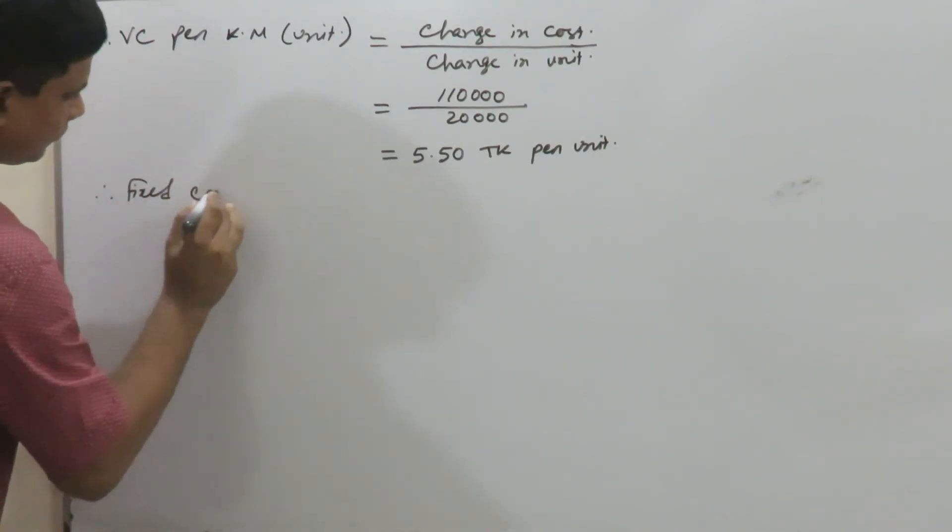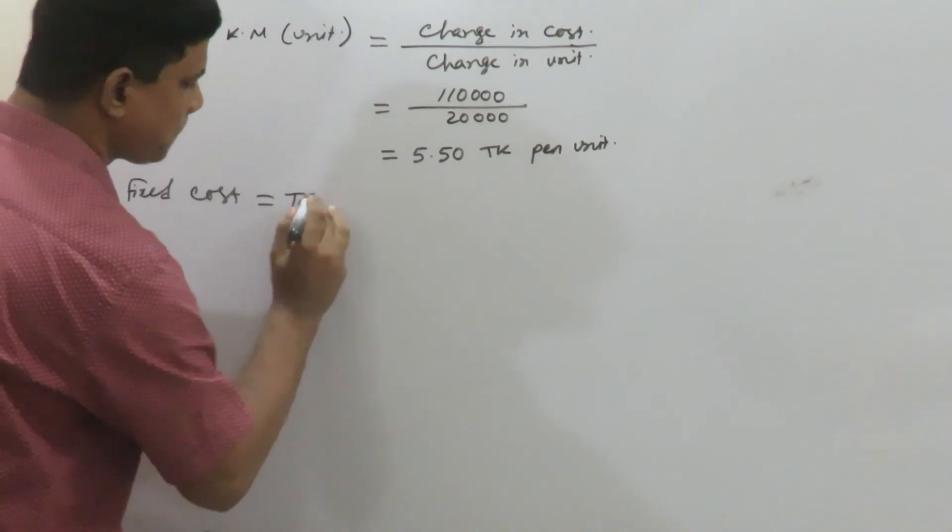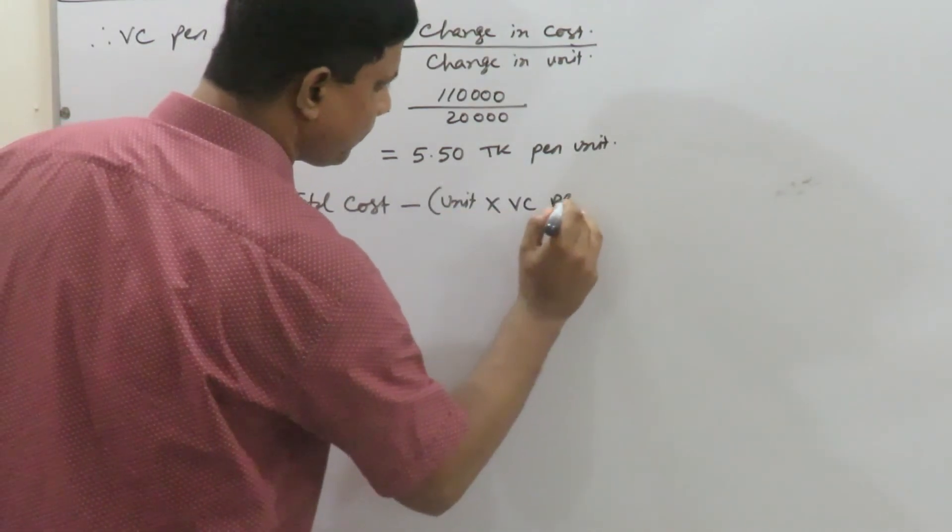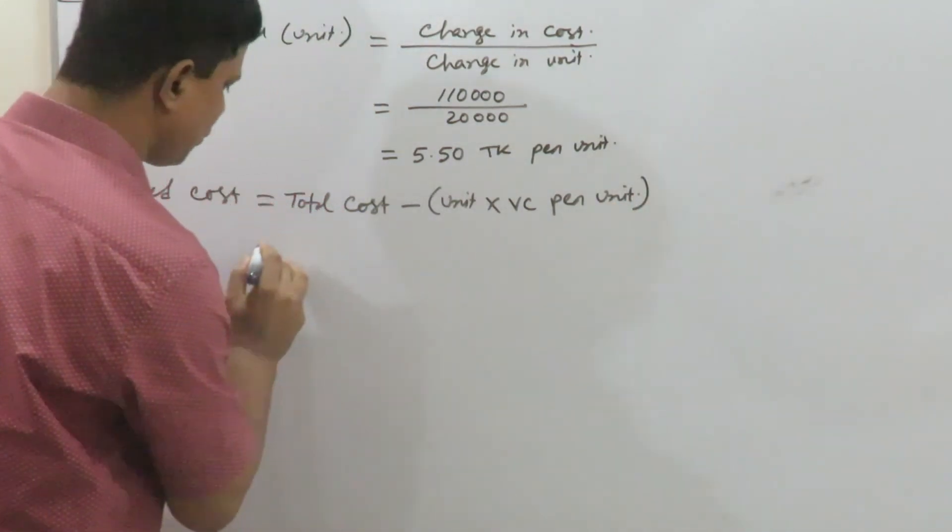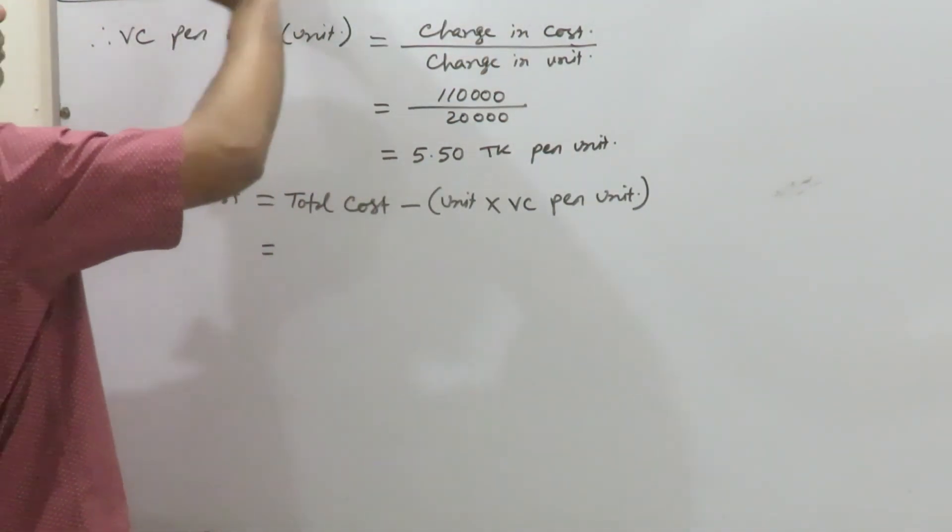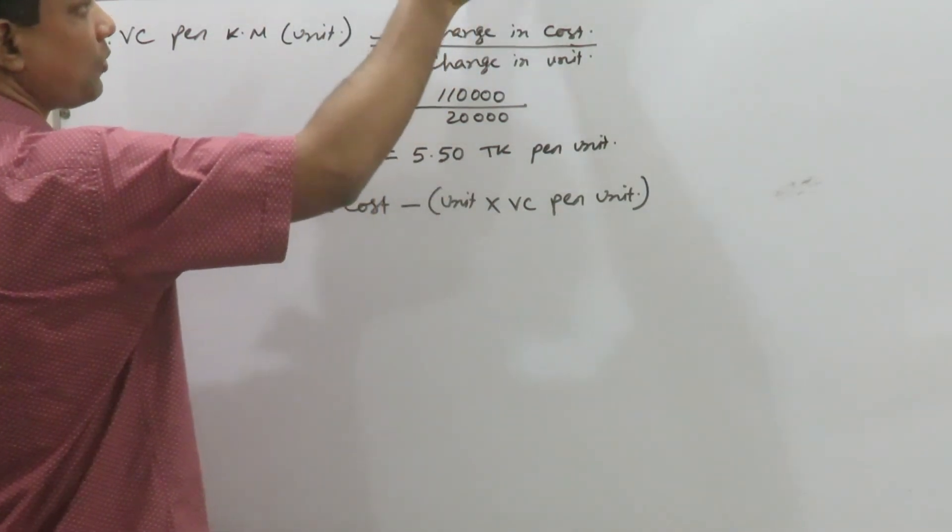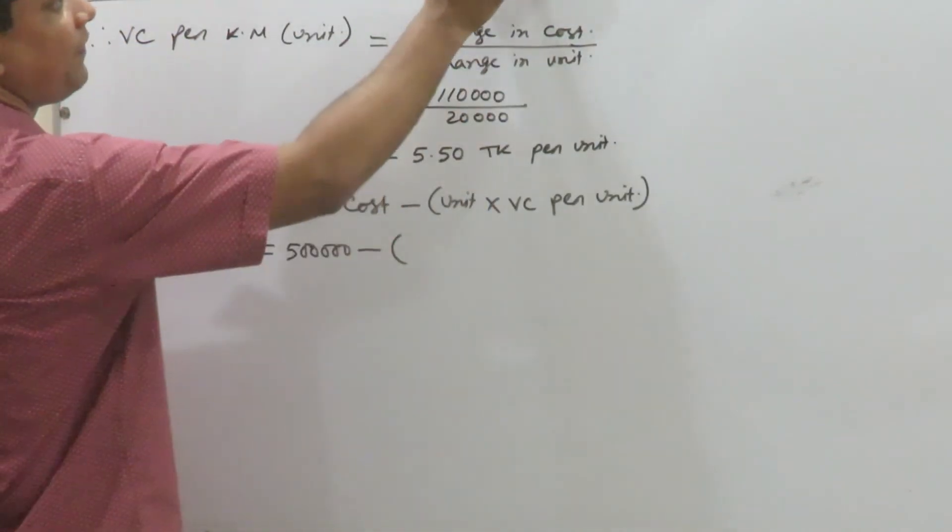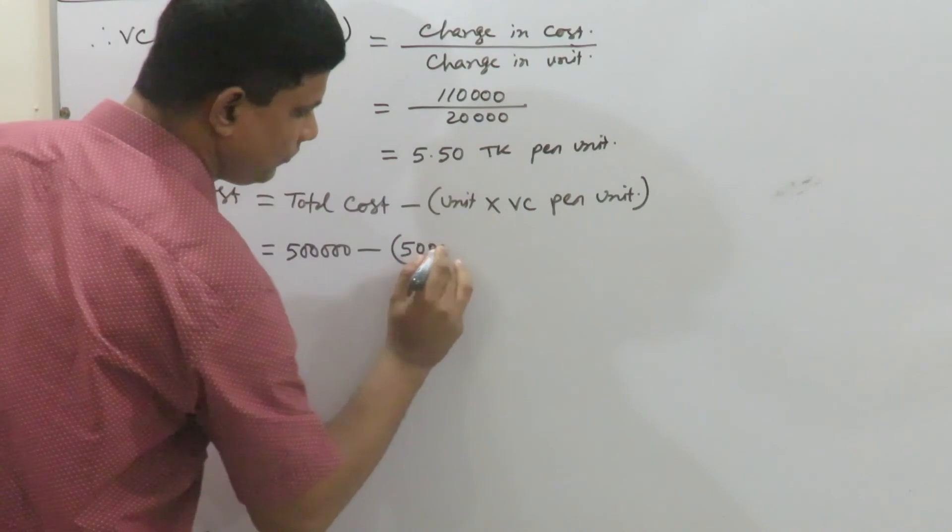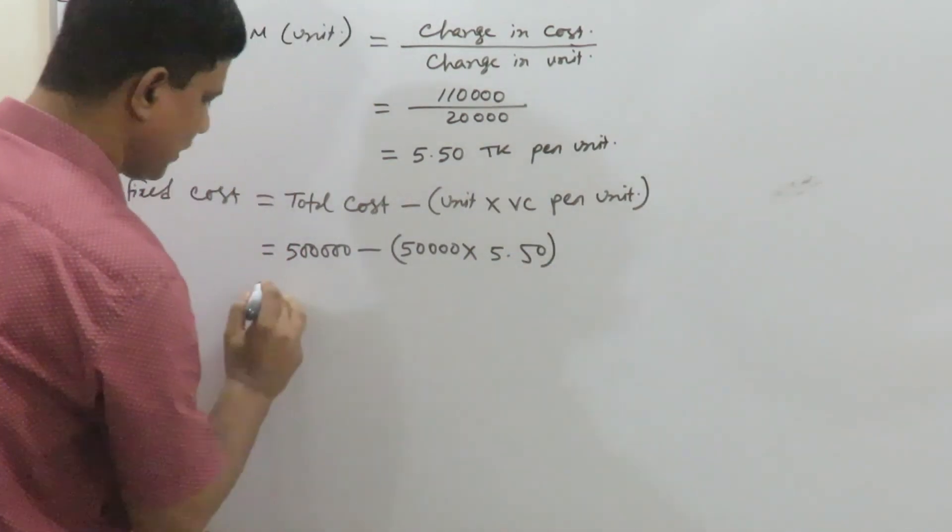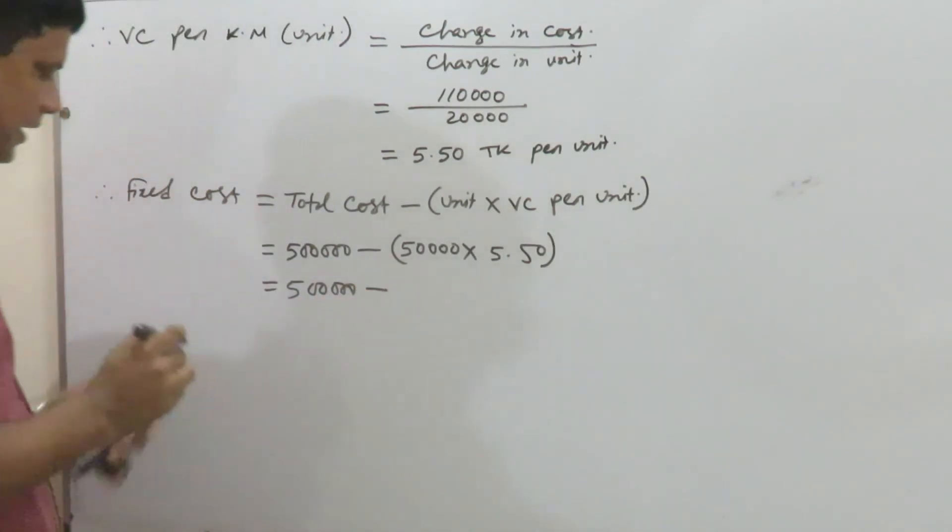Now for fixed cost. Fixed cost formula is total cost minus unit times variable cost per unit. Total cost is 500,000 taka minus 50,000 kilometers times 5.50 taka per kilometer. That equals 500,000 minus 275,000, which equals 225,000 taka fixed cost.